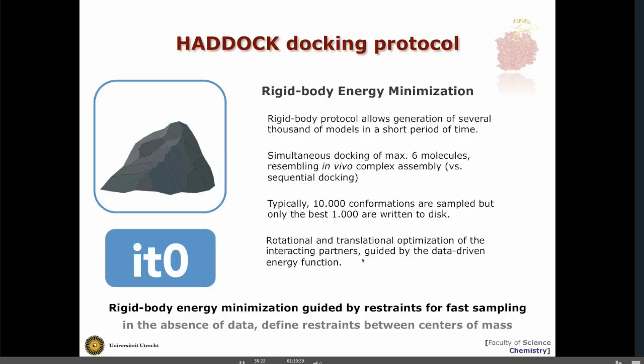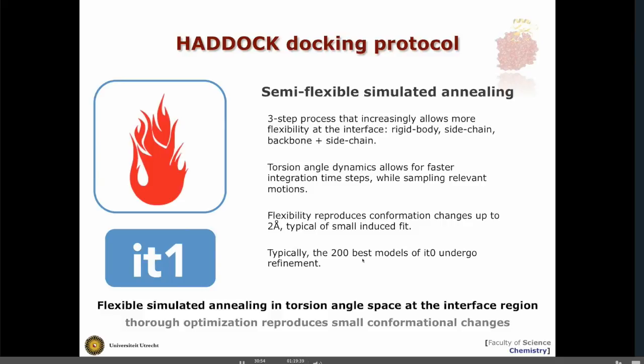One feature of Haddock is that it can handle ensembles of conformations. Even doing rigid body docking at this stage, you can give as input an ensemble of NMR structures, homology models, or snapshots from molecular dynamics simulations. Restraints are key to bring the molecules together. After this stage, there is a first selection — we only retain a fraction of the models generated; the default is 200 out of the 1,000, which then pass to the semi-flexible simulated annealing stage.